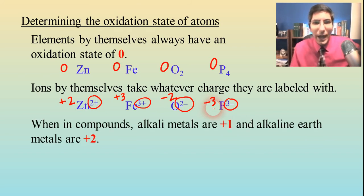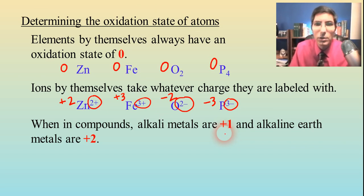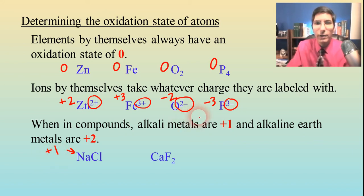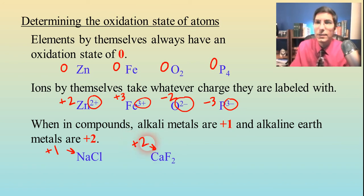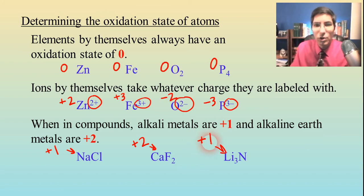If you have a compound, alkali metals are going to be positive one and alkaline earth metals are positive two, which you probably already knew from first year chemistry. So in sodium chloride, the sodium is going to have a positive one oxidation state. Or calcium fluoride — focusing on the calcium — that's going to be positive two because it's in the second group of the periodic table. Or lithium nitride: lithium is in group one, so it's got a positive one charge.